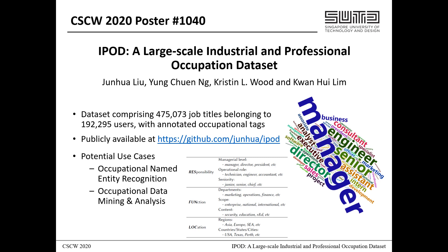In addition to this dataset, we also have 3 annotators that look at the job titles and come up with one of 3 tagging categories, such as the level of responsibility, the function based on the different business areas, and the location that the job title holder is responsible for.